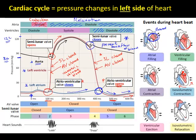There are always two sounds in a heartbeat: lub and dub. The first sound, lub, corresponds to the AV valve closing at the start of ventricular contraction. The second sound, dub, is when the semilunar valve snaps shut as the pressure in the aorta becomes higher than that in the left ventricle. So lub is the AV valve closing and dub is the semilunar valve closing.